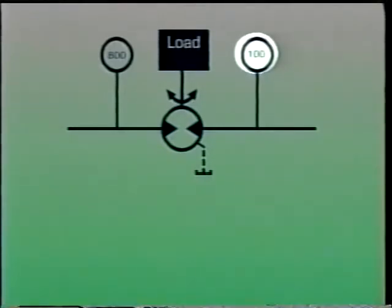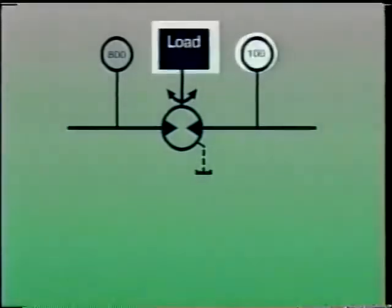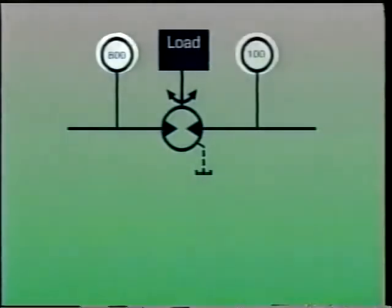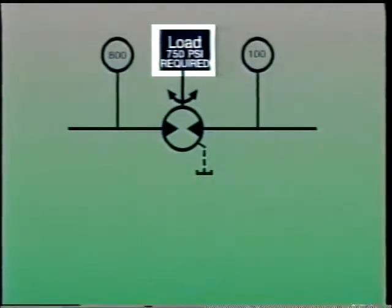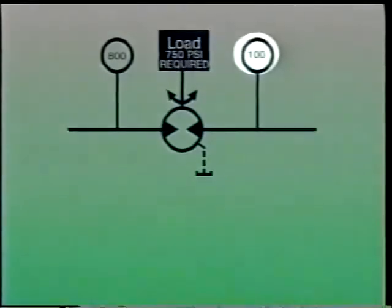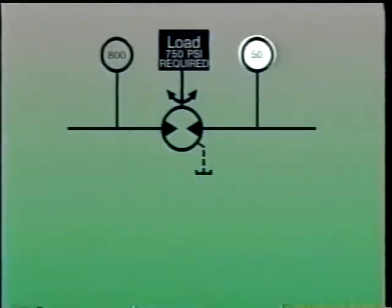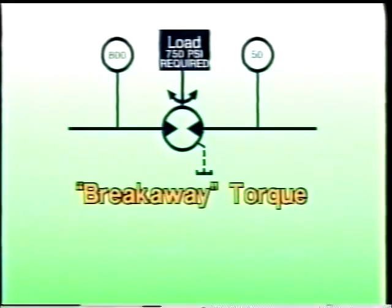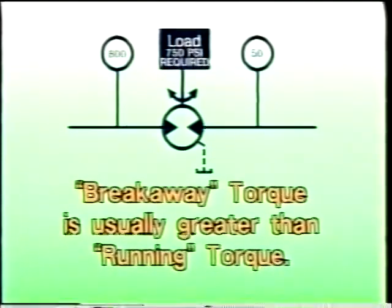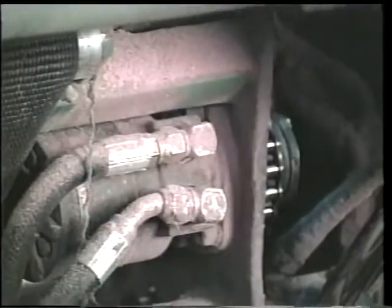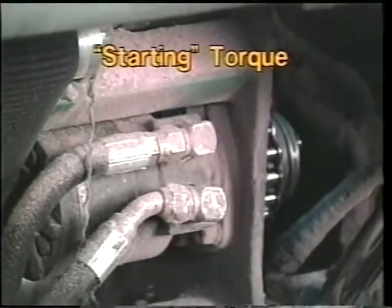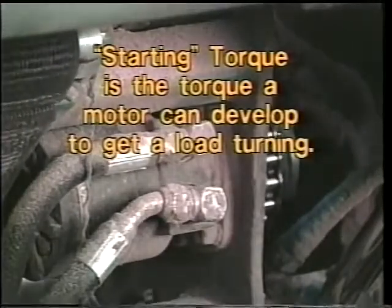In this system, 100 psi back pressure prevents the motor from moving the load because back pressure attempts to turn the motor in the opposite direction. 800 psi less 100 psi back pressure leaves only 700 psi available for a load which requires 750 psi to move. Even 50 psi of back pressure could prevent the load from turning, because the breakaway torque — the torque required to get a load turning — is usually greater than the running torque required to keep a load turning. Industrial motors are rated for breakaway torque, running torque, and a third kind: starting torque, which is the amount of torque the motor can actually develop to get a load turning.